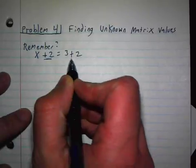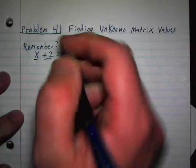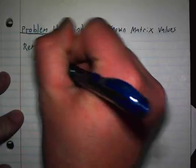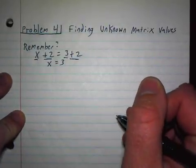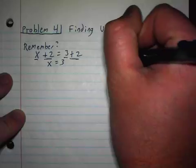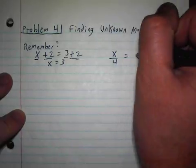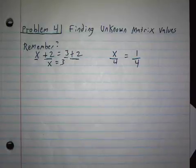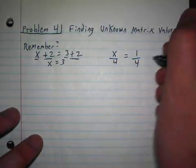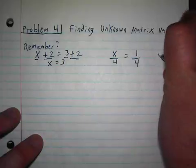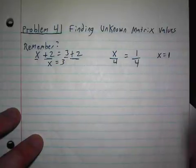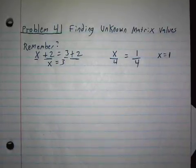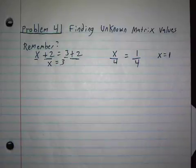Because if these are the same, then those have to be the same. So x is 3. Or if you had a fraction, if the denominators are the same, then that means the numerators are the same. So x is 1, right? So if I set one matrix equal to another matrix, then all of the corresponding elements must be equal.